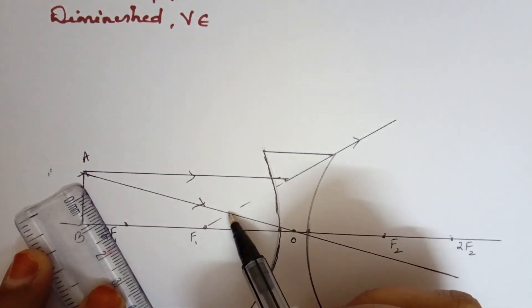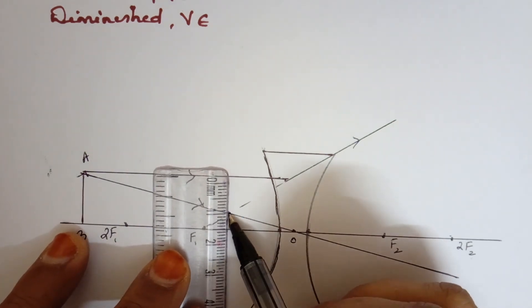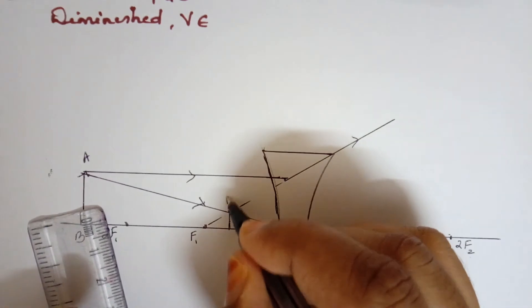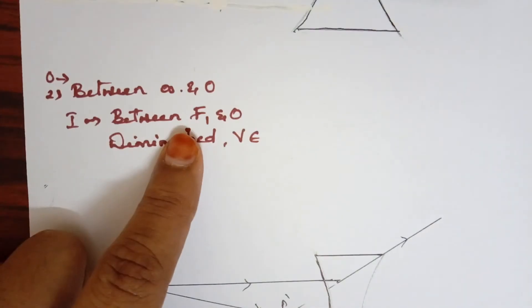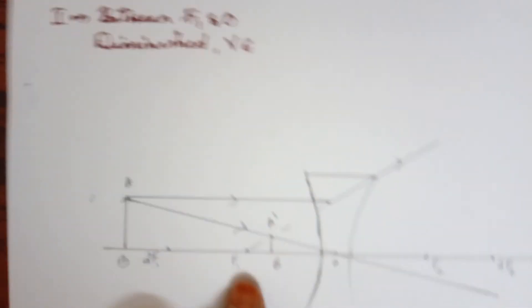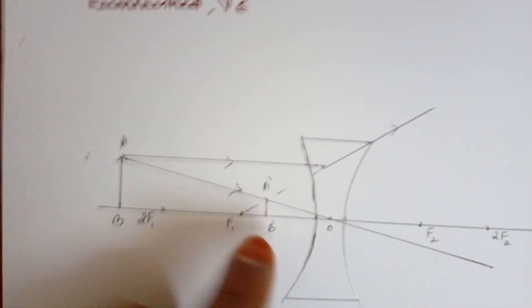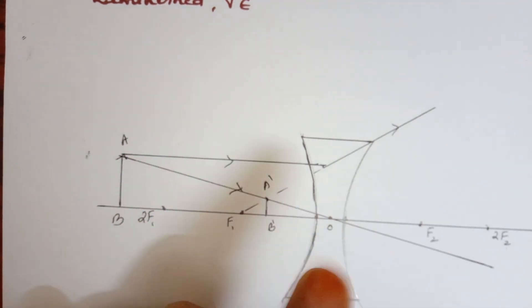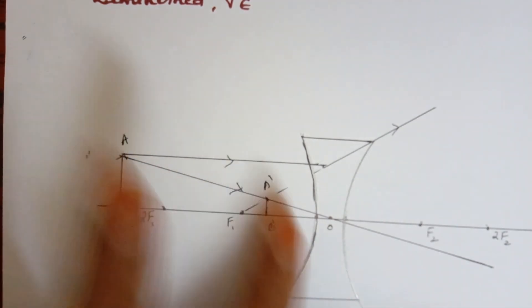So I'm going to draw a line here. This is going to be my image A dash B dash. See here, my image is formed between F1 and O. As you can see, the size is very much diminished. This is my object and this little one is my image. Other than that, you can see that it's standing on the line, hence it is virtual and erect.